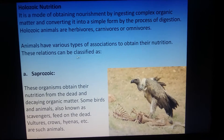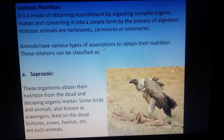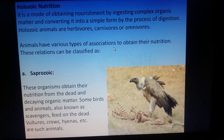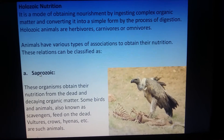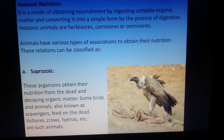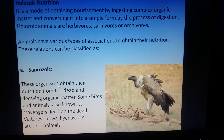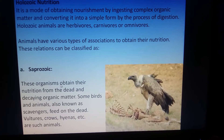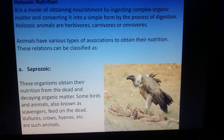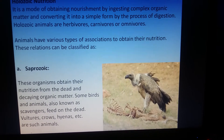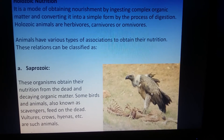Under holozoic nutrition, there can be some associations — relations between animals. The first is the saprozoic relation, in which some organisms feed on dead and decaying matter. They are known as scavengers.